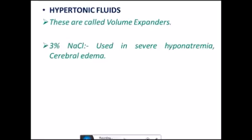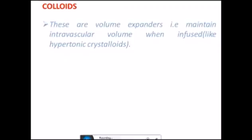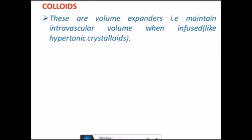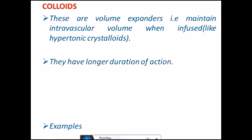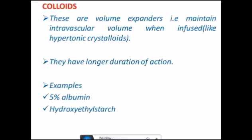Then we have hypertonic fluids. These are volume expanders because they remain in intracellular volume. Because of high osmolarity they attract fluid from outer compartments; they do not leave the intravascular space. 3% NaCl is used in severe hyponatremia and cerebral edema. D5NS is also a hypertonic fluid. Now we come to colloids. These are volume expanders, maintain intravascular volume when infused like hypertonic crystalloids. They have longer duration of action because they remain in intravascular space. Examples are 5% albumin and hydroxyethyl starch.